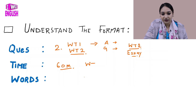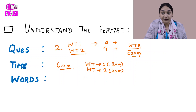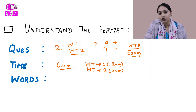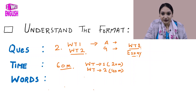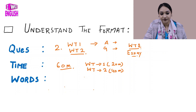Usually, students complete Writing Task 1 in 20 minutes and can take up to 40 minutes for Task 2. These are the maximum times you can take; you can finish in less time. That is entirely dependent upon your prowess in writing, which is why when you practice at home, you have to be careful about time.